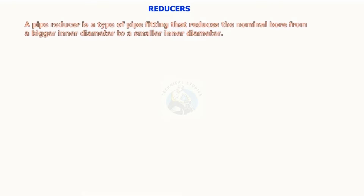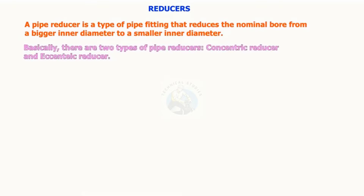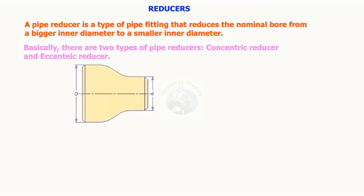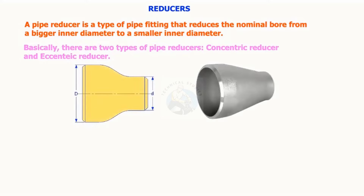A pipe reducer is a type of pipe fitting that reduces the nominal bore from a bigger inner diameter to a smaller inner diameter. Basically, there are two types of pipe reducers: concentric reducer and eccentric reducer.